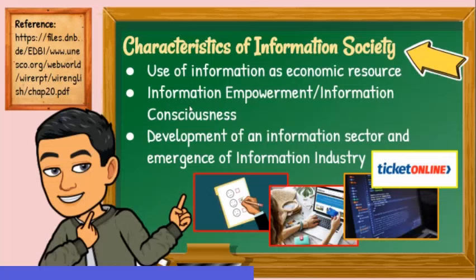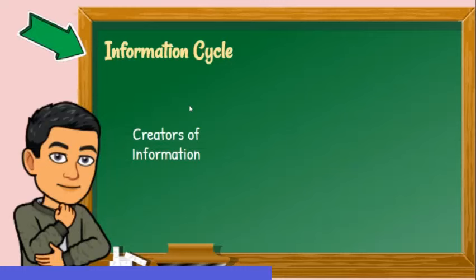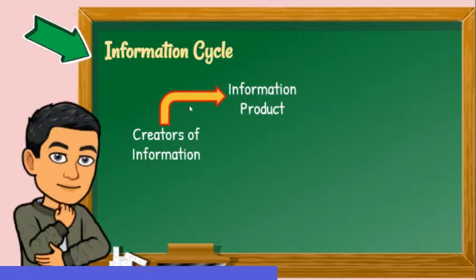How is information really created? Let's take a look at the information cycle. It starts with the creators, like writers, musicians, artists, researchers, database producers, and web producers. The output is information products, such as books, videos, magazines, and websites.